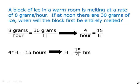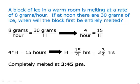Write this as a mixed numeral, 3 and 3 quarters hours. We're asked when, which is actually a clock time. So we started at noon. 3 hours later would be 3 p.m. 3 quarters of an hour is 45 minutes. So that means it's completely melted at 3:45 p.m.